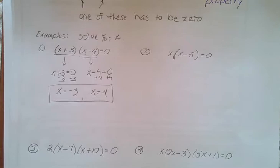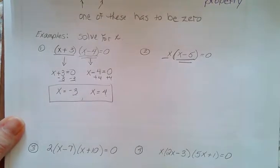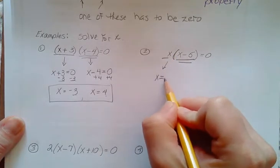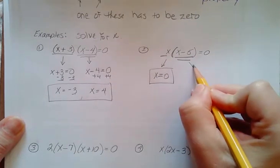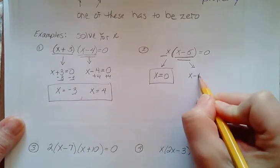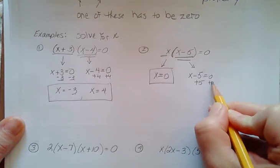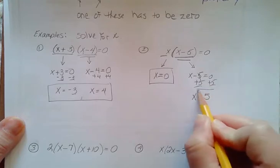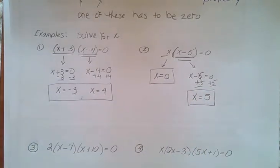Here's number 2. For number 2 over here, we have 1, 2 factors. Either this first factor is 0, and that's kind of already solved for us, or this second factor is equal to 0. Add 5. And x is equal to 5. Once again, two different solutions.